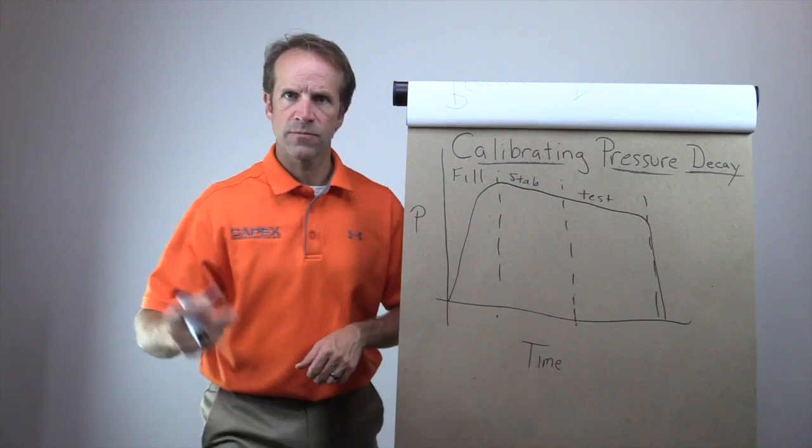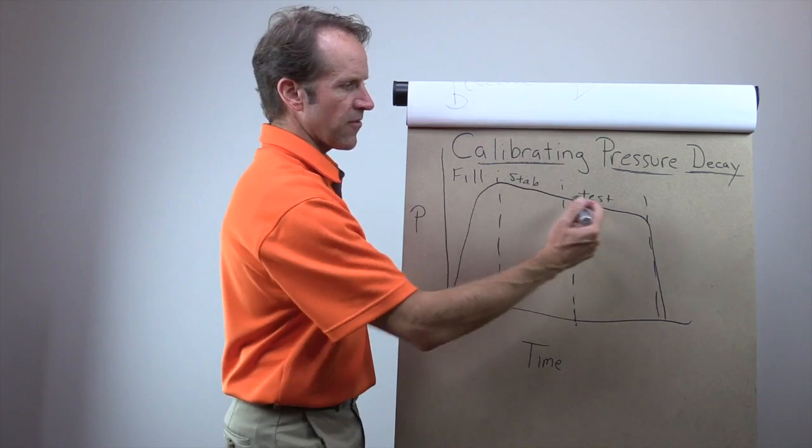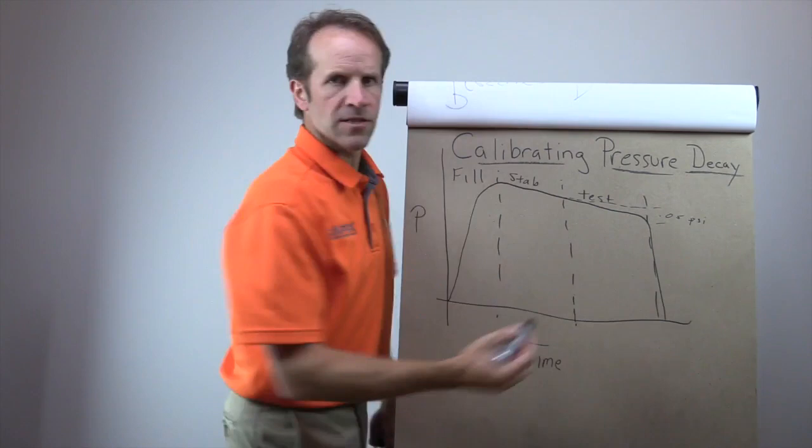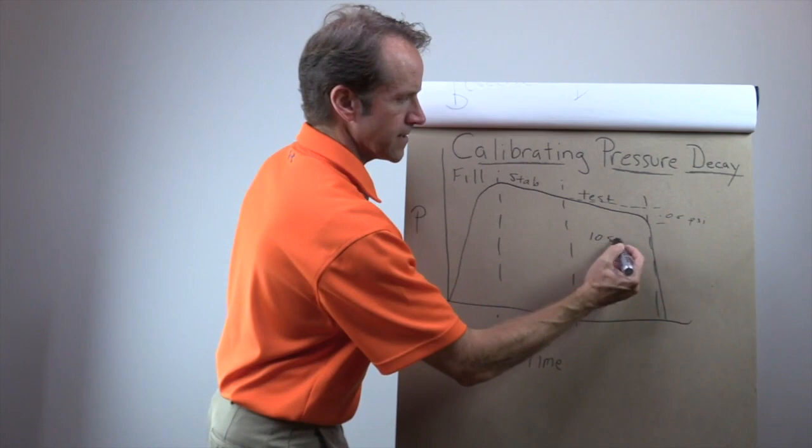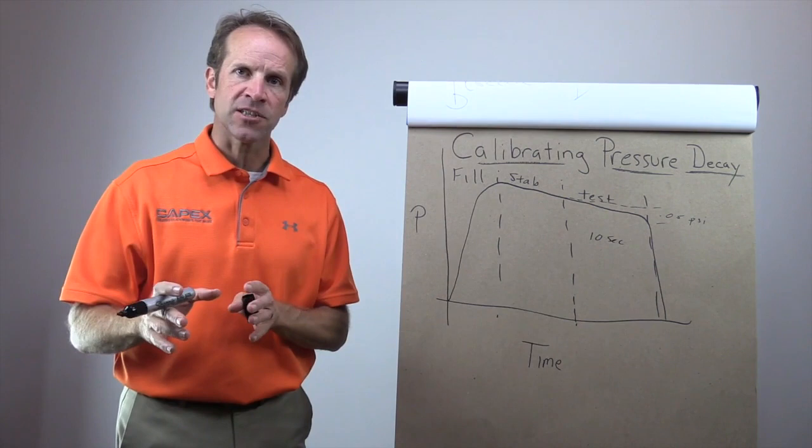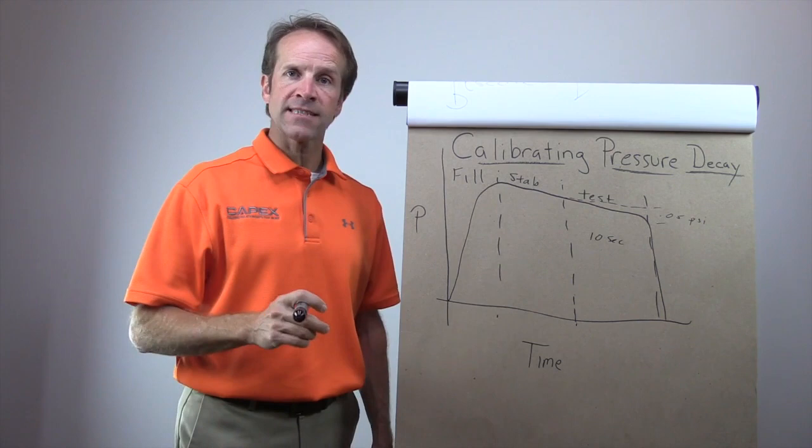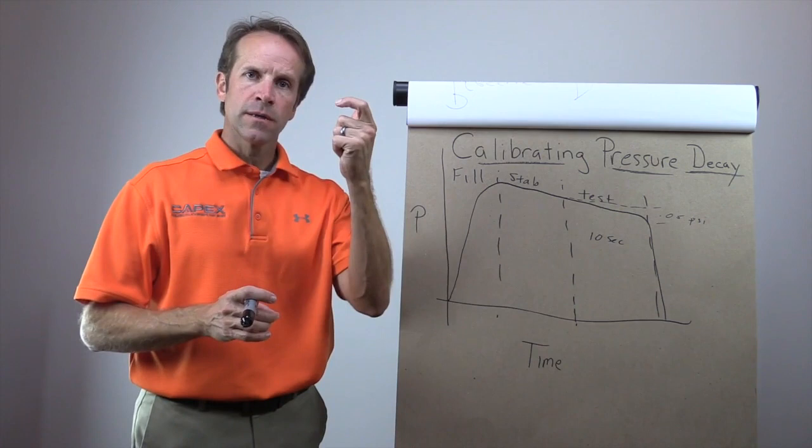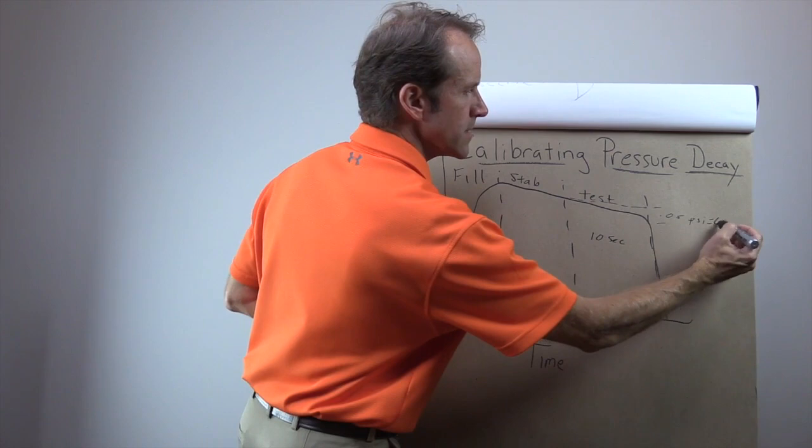Right here at the end, obviously, we're dumping all the pressure out of the part. So we run our first test, and it's going to measure the amount of pressure loss from this point to here. So let's say it's 0.05 psi. 0.05 psi pressure loss during this, let's say it was 10 seconds. So over 10 seconds, we lost 0.05 psi from our known good part. So to the instrument, 0.05 psi now becomes 0 SCCM. So every part that you run after this calibration, if it leaks 0.05 psi, it will display 0 standard cubic centimeters per minute. So 0 SCCM equals 0 SCCM.